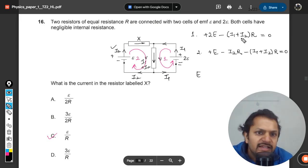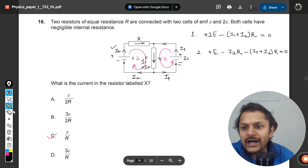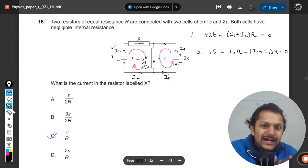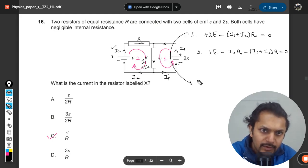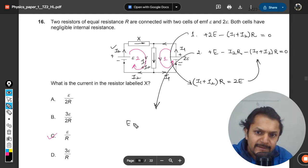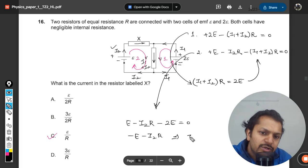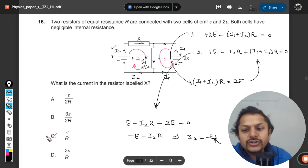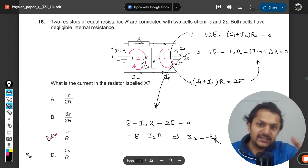Let me make it more convincing. We can find this value and substitute it here. The equation becomes minus e minus i2r. Clearly i2 is coming out to be negative e by r. This is how you have to do it. This method could be a bit cumbersome and there's more chance of making clerical mistakes.